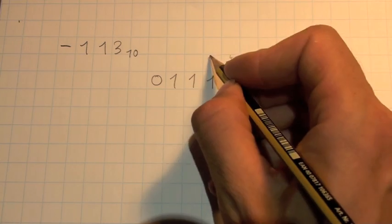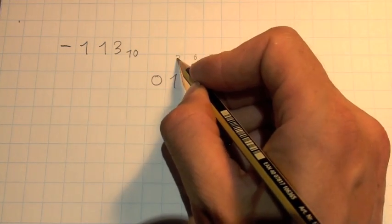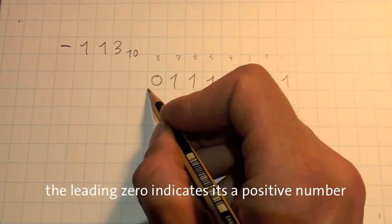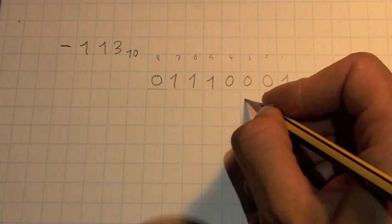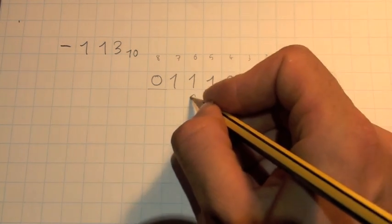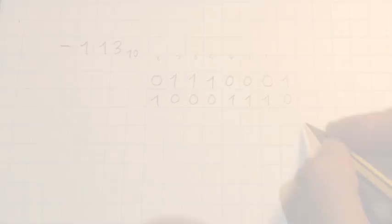I've started off by writing down the positive representation of 113. The first part of the 2's complement is to flip the number over, reversing all the 1's and 0's.